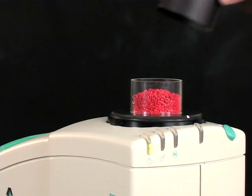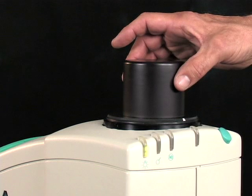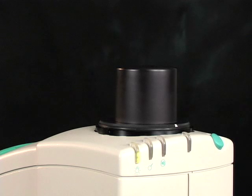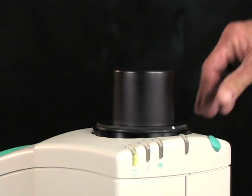The sample cup is then covered with the opaque cover. The cover eliminates the possibility of ambient light affecting the measurement. The read button is then pressed on the LabScan XE to take a reading.